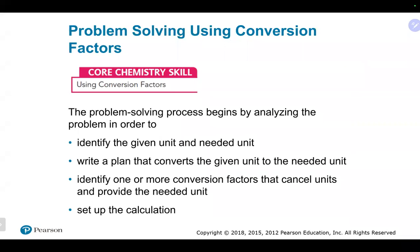A good approach to these problems: first write what you're looking for, then think about the equalities and conversion factors that will get you there, set up the problem so the units completely cancel, and give the answer to the proper number of significant figures. There could be multiple pathways to get the same answer depending on which equalities you use — as long as you use legitimate conversion factors, they should all get you basically the same answer.